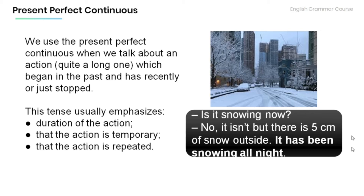Have a look at the example: Is it snowing now? No, it isn't. But there is 5 cm of snow outside. It has been snowing all night. Note that the sentence 'It has been snowing all night' is in the present perfect continuous form, and it's used to talk about an action that has just stopped and to emphasize how long it had been snowing.